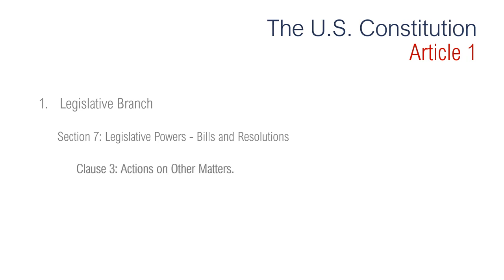Section 7, Clause 3 is regarding actions on other matters. It says that the president must have the opportunity to either sign or veto everything that Congress passes, except votes to adjourn and resolutions not having the force of law.